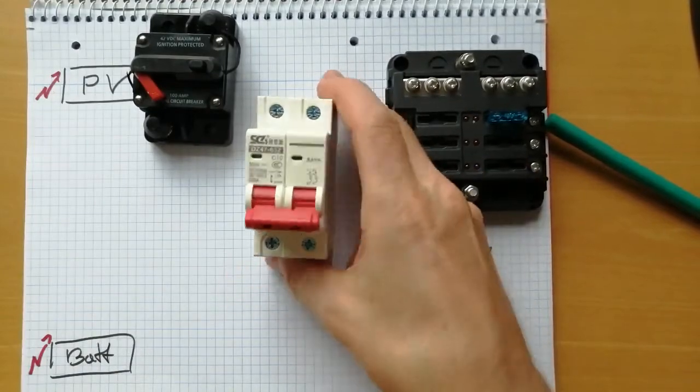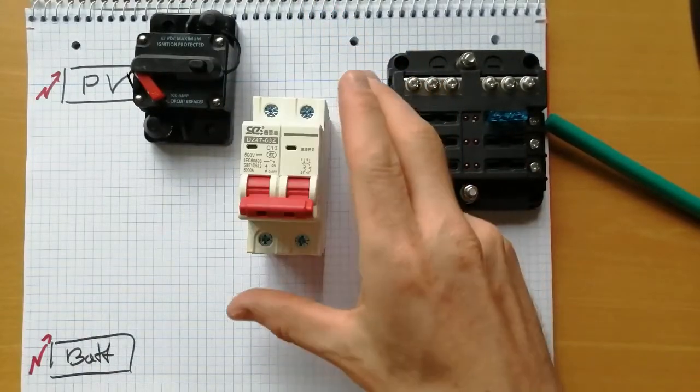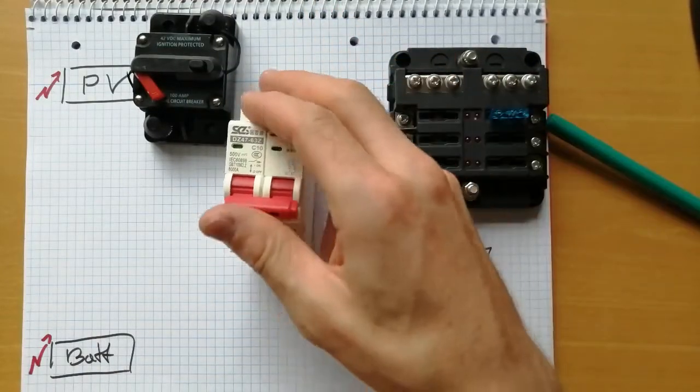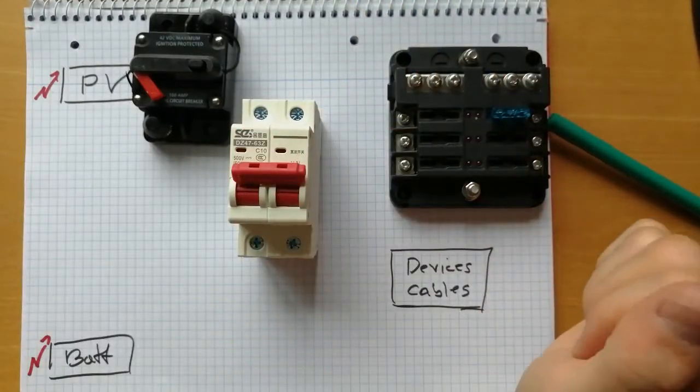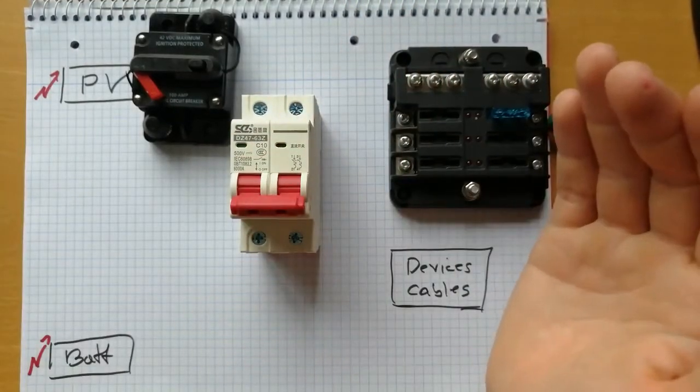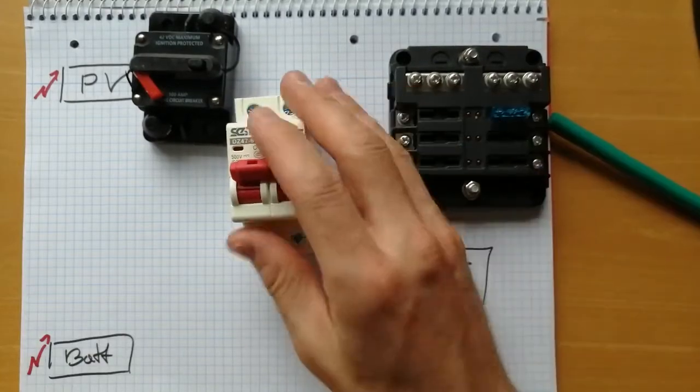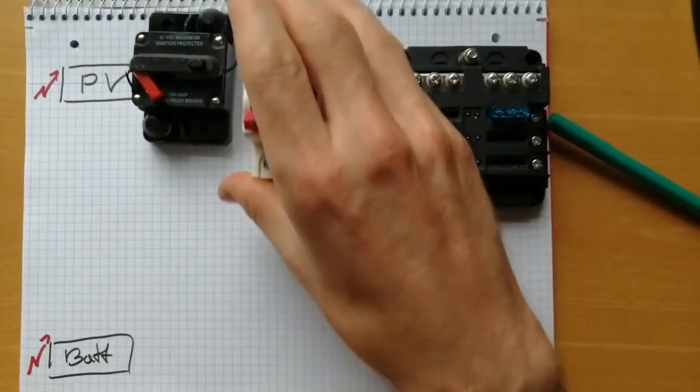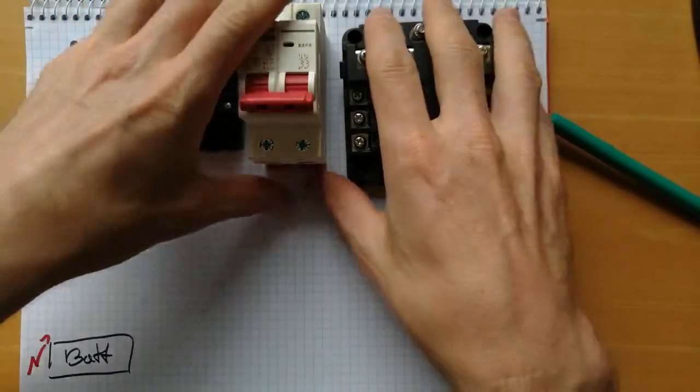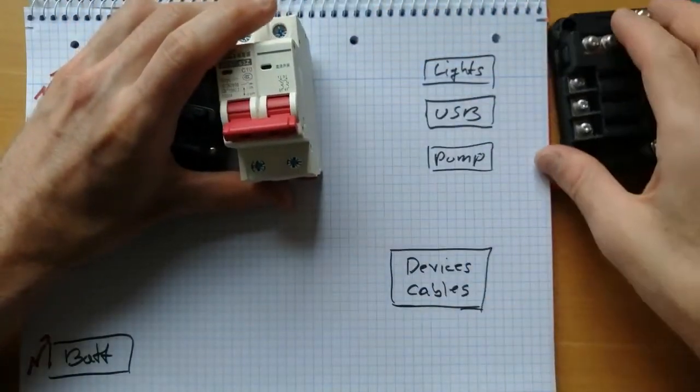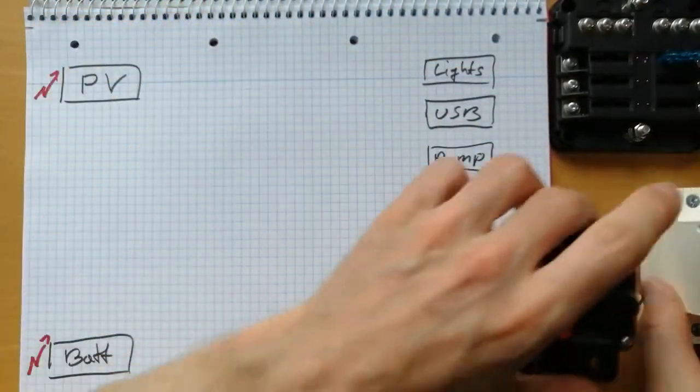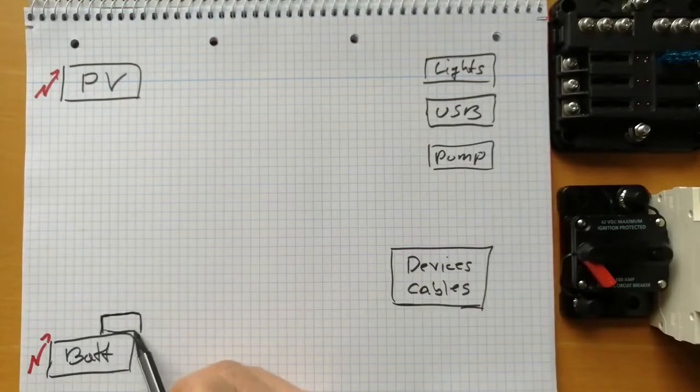Another version is this breaker. Maybe you know that from your apartment. And this one is a DC breaker and you can of course also switch it off and on and you can reuse it. So those are the main types of fuses that at least I want to use.